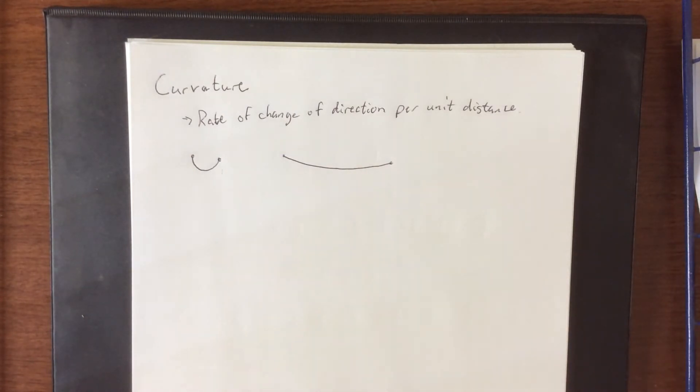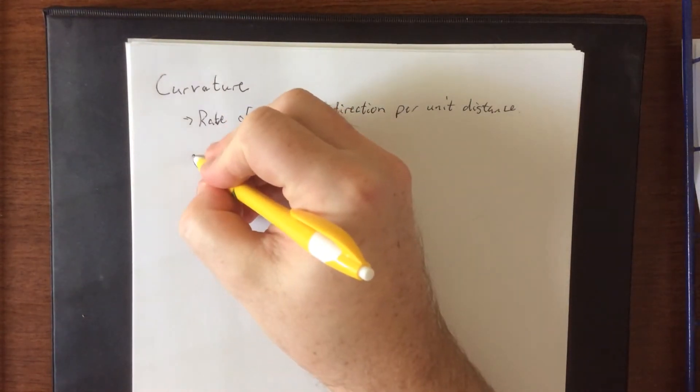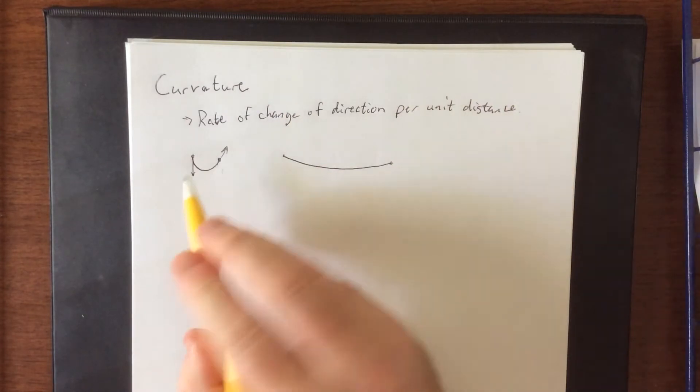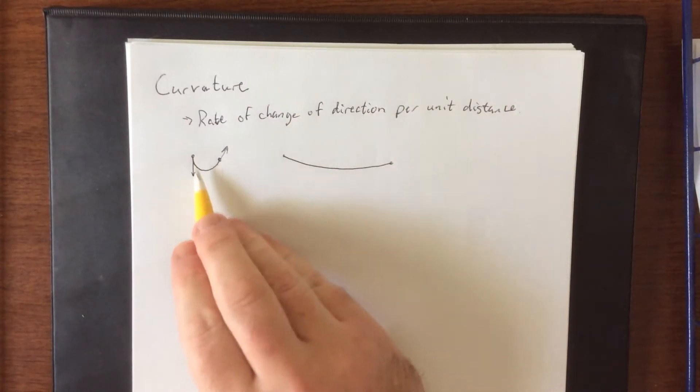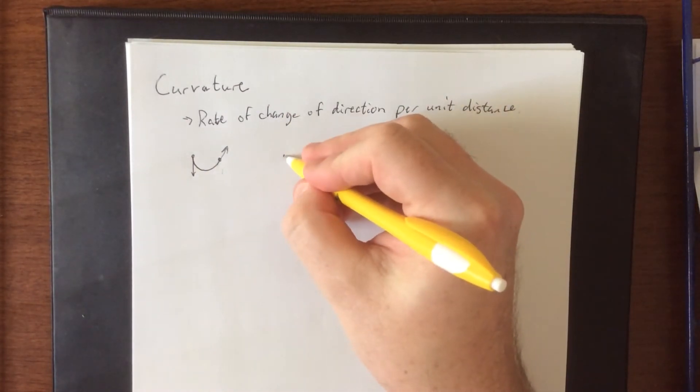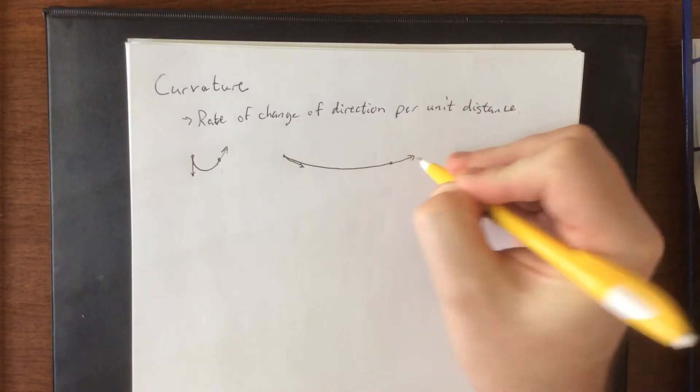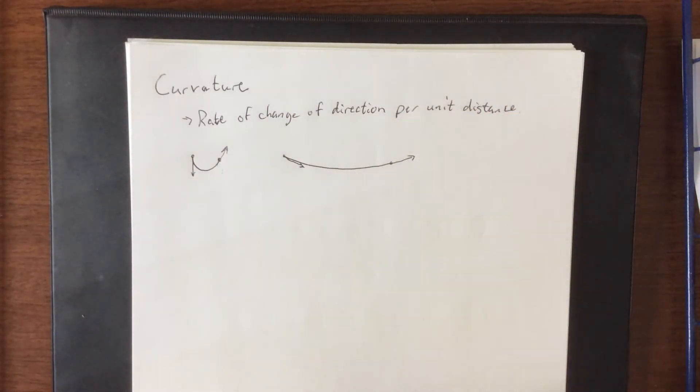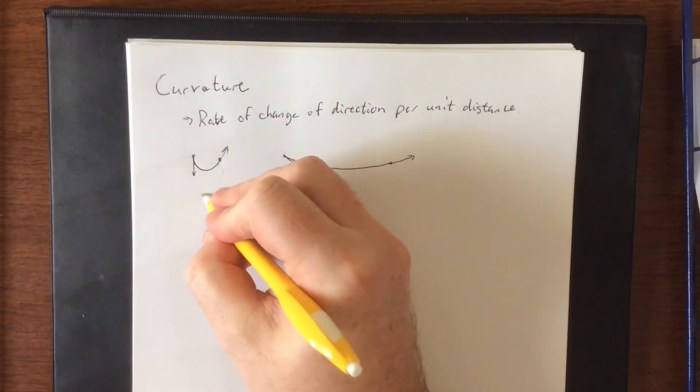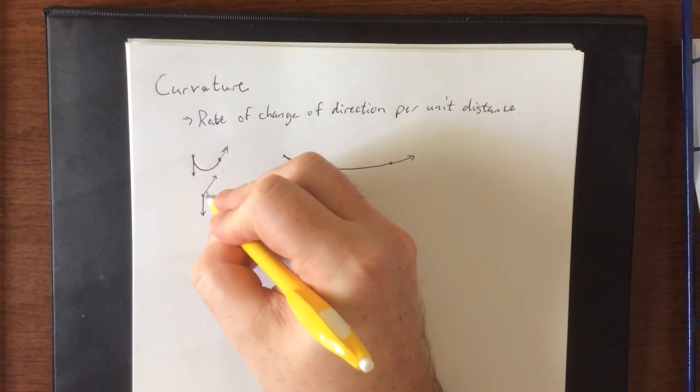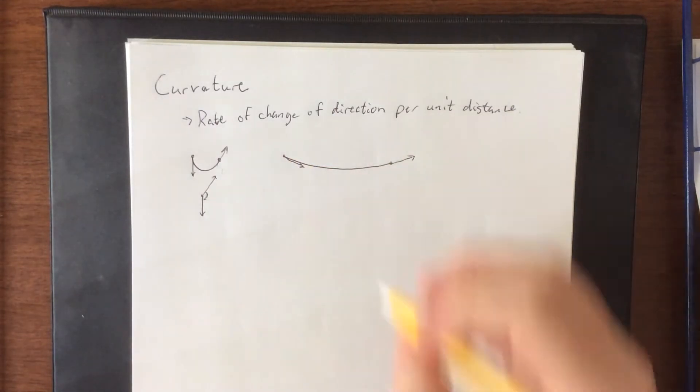The way that we can help quantify this is by considering tangent vectors. Over the course of a very short length, this direction vector has turned around almost completely. These two vectors, if drawn with the same initial point, would look kind of like this, meaning that there is a very large angle between them.